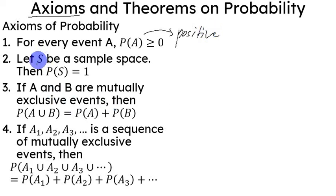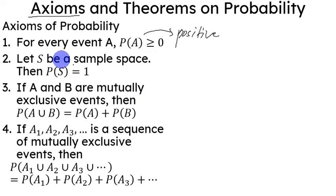The next axiom: let S be the sample space. Then the probability of the sample space happening is 1. Since the sample space is the set of all possible outcomes, if all of them happen, then we are certain that the sample space did happen. That's why the probability of the sample space is 1 — because the experiment did take place, whatever result comes out.